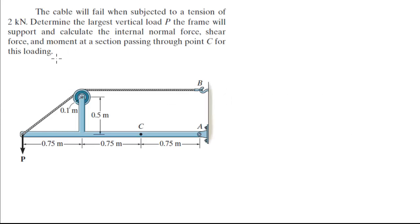Alright guys, let's do this problem where they tell you that this cable will fail when subjected to a tension of 2 kN. Find the largest load P, the frame will support and calculate the internal normal force, shear force and moment at a section passing through at point C for this loading. So basically they are telling you that this tension right here, T, will fail at 2 kN so we are going to set it equal to 2 kN.